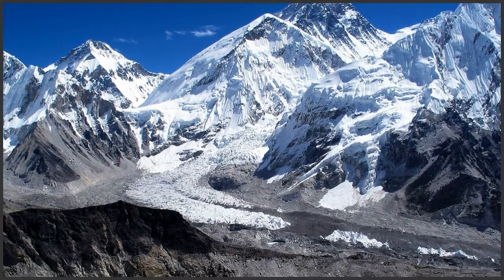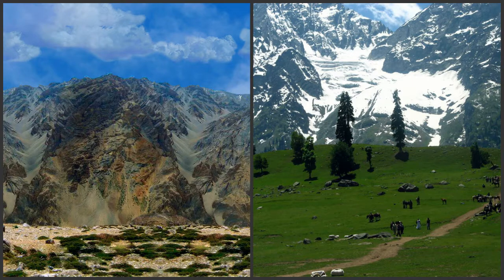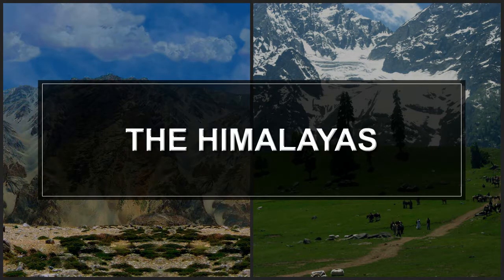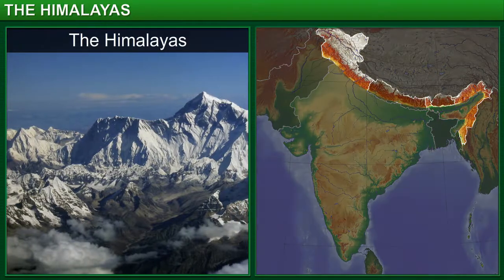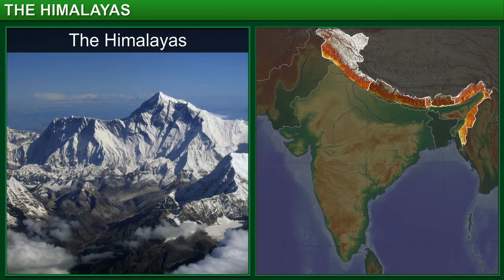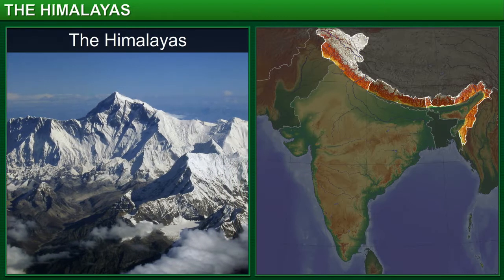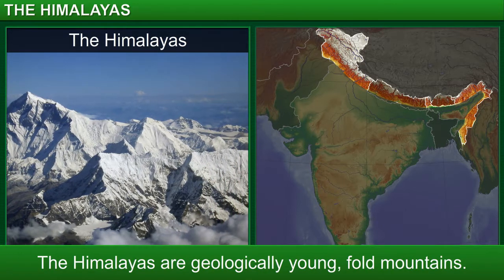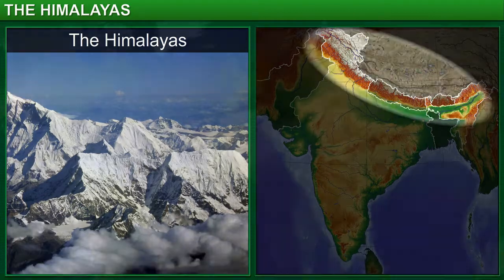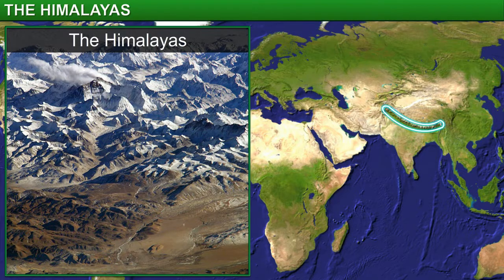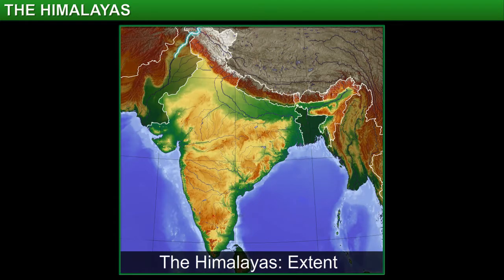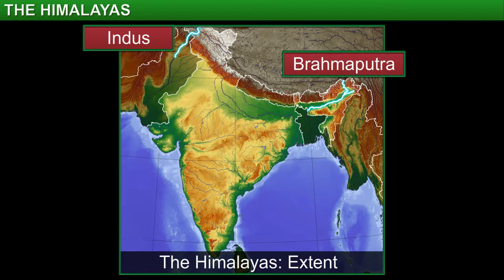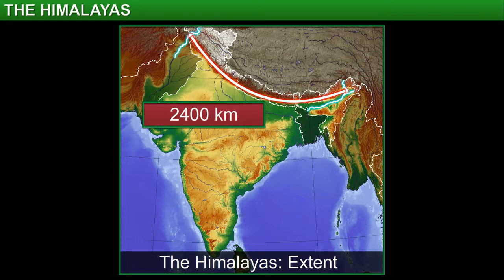In this module, you will learn about one of these groups, the Himalayan mountains. The Himalayas are fold mountains that cover the northern border of India. They are geologically young as compared to other mountain ranges. The Himalayan range is the highest and the most rugged mountain range in the world. It extends from the river Indus in the west to the Brahmaputra in the east, forming an arc of about 2,400 km.